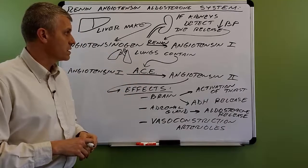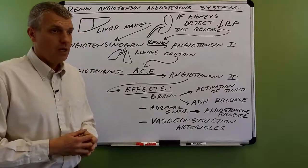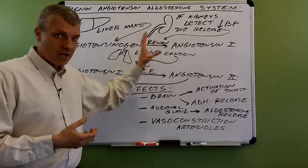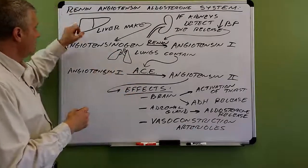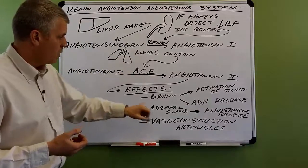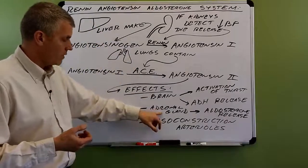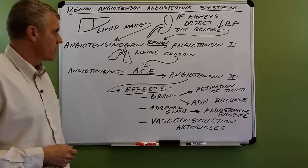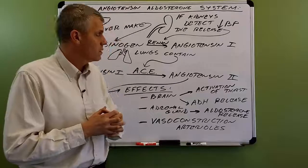That's the entire renin-angiotensin-aldosterone system. Memorizing the RAAS is a great way to help beginning students understand that the entire human body works as a whole. We have the liver representing the digestive system, the kidneys representing the renal system, the lungs representing the respiratory system, the brain representing the nervous system, and the adrenal glands and liver representing the endocrine system — multiple systems all working together for blood pressure homeostasis.